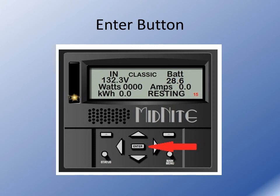The enter button — basically just like it says — any time you make a change in the Classic, any of the programming, you need to push the enter button. You'll see "data sent and saved," and that means it's actually written to memory in the Classic. So power cycling the Classic will not lose that change. If the button is not pushed and the Classic is power cycled, it will revert back to the way it was programmed before you made the changes.